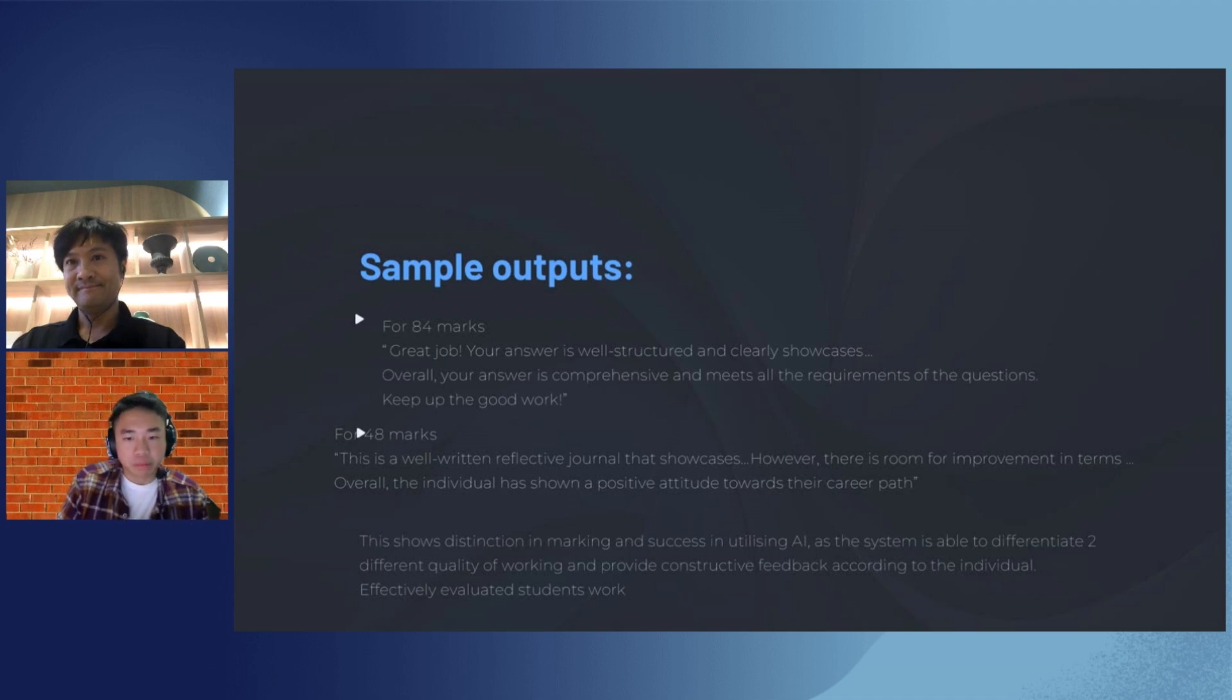Right, so, this is the sample output. Minor technical issue. Right now, it was showing that the AI has managed to distinctively distinguish two work submissions. For the first submission, it scored a relatively high mark, 74 marks, so it could tell the students, oh, you did a great job, the answer is well-structured, keep the good work. And for the less outstanding work for 48 marks, you could also have a distinctive feedback to the students saying, this is a well-written reflective journal, the overall, the individual has shown a positive attitude towards their career path.